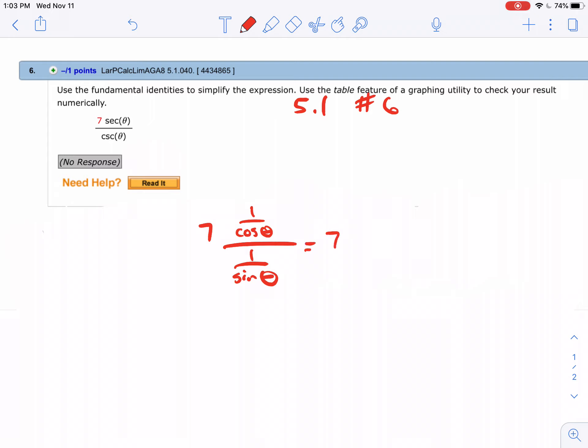And if I do this, I have 7, 1 over cosine of theta times. Now remember, when you divide by a fraction, you multiply by the reciprocal. And so now I have 7 times sine over cosine.